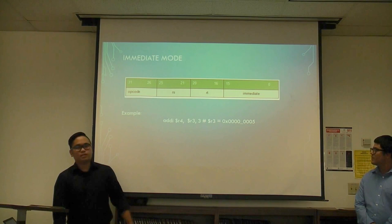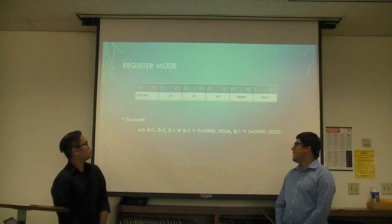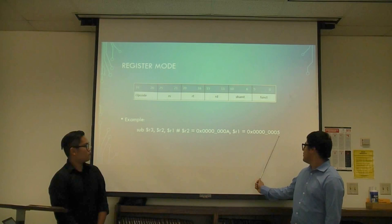Another addressing mode we have is register mode. A register is the destination, and registers are also considered the operands. So in this example, R2 and R1 are registers. When you add A plus 5, which are contained in those registers, that equals F, which is then stored into register 3.